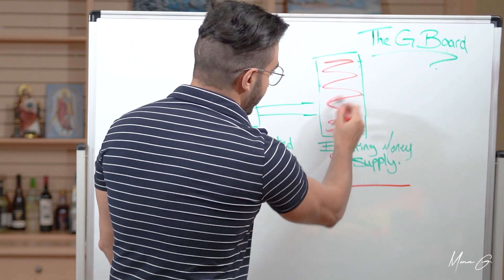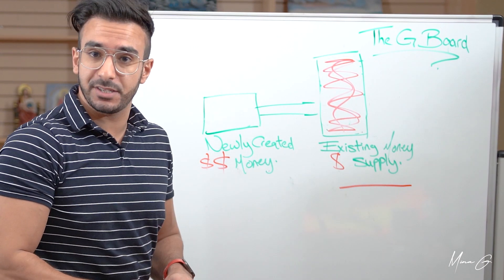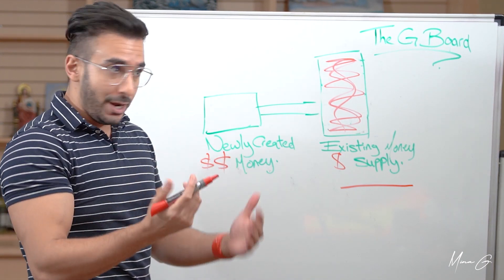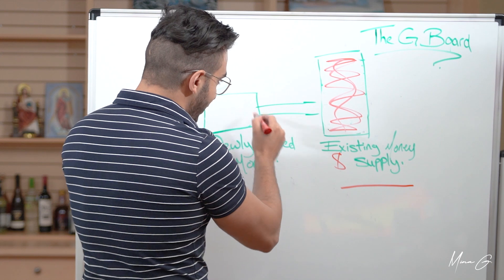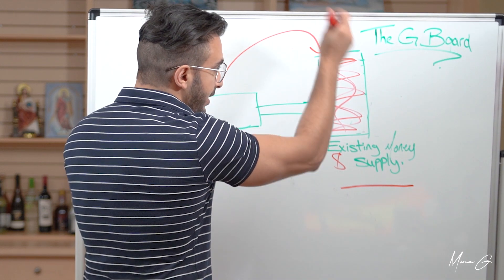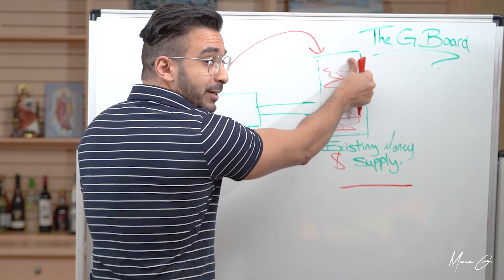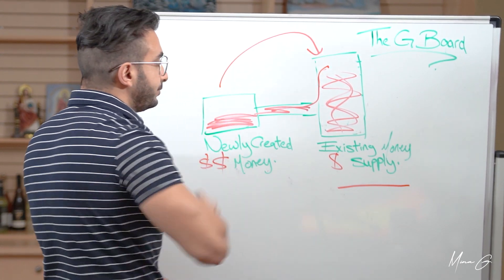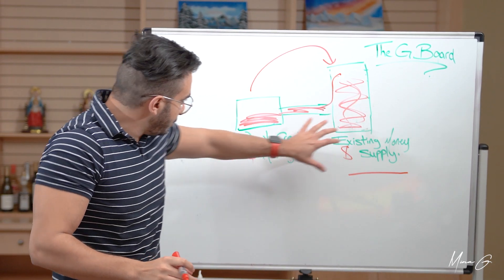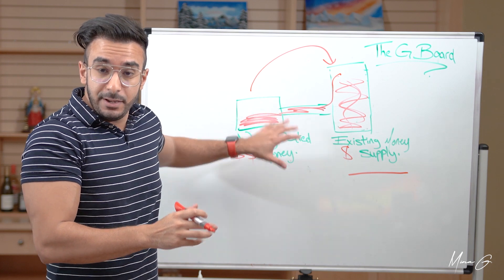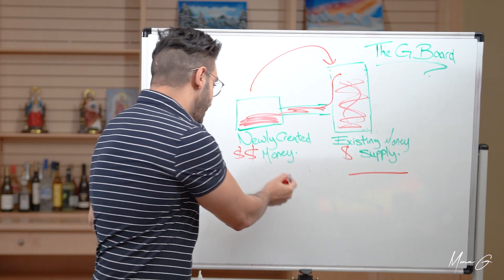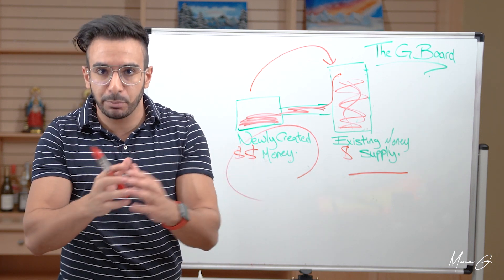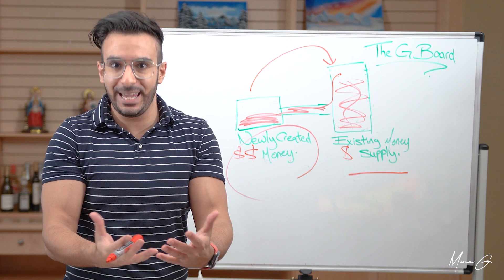This is the existing money supply — let's assume it's like that. This is the value of the current existing money supply. There's not enough goods and services to support this new money, so what happens is it essentially steals its value from the existing supply. This starts losing a little bit of value and transfers it over to the new money. So the value is the same, however the money is more, which essentially means every individual dollar has less purchasing power because it's inflated.